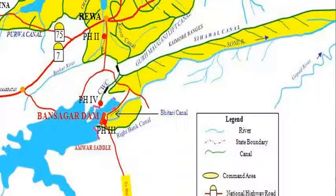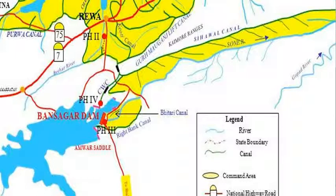From the branch canals, it's not shown in the figure, but you'll have more canals coming out, and those are called distributaries. This is not a hard and fast rule — you could have just one main canal, two branch canals, and then a lot of distributaries and so on.